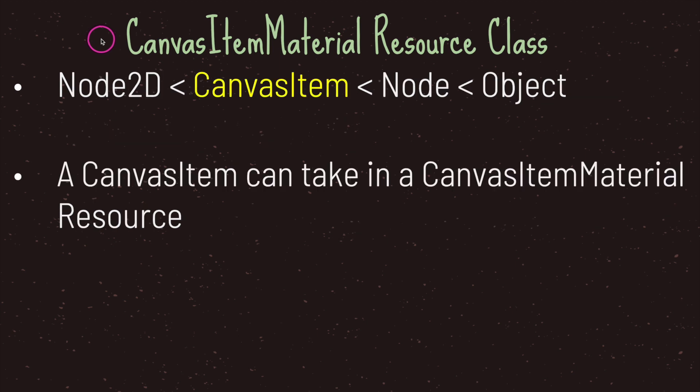Now the canvas item material resource class is usually attached to a canvas item class. And since the Node2D class object is a child class of canvas item, that means that every Node2D game object can in fact use the canvas item material resource class.